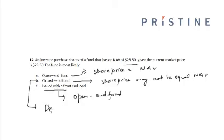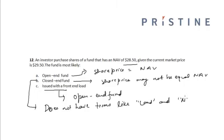Since closed-end funds do not have load and no-load terms, and in this case the share price of the fund is $29.50, which is different from the net asset value of $28.50, it is most likely an example of a closed-end fund. So the correct option is Option B.